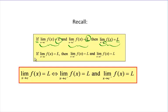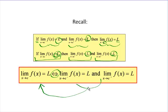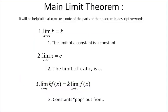This is a biconditional statement. If the overall limit exists, then we know the one-sided limits also exist and must equal the same value. So it works in both directions — don't just go one direction. Make sure on our theorems and theory questions that you can cover those in both directions.